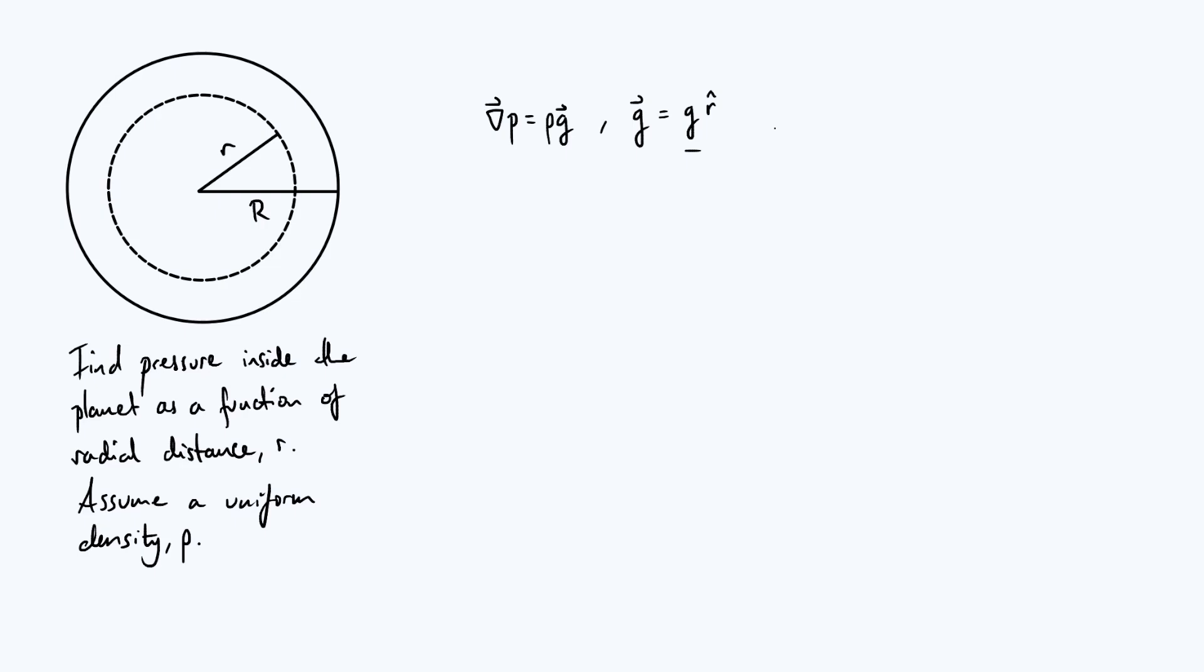So let's choose the most convenient surface to integrate over, which is just a sphere of radius lowercase r. In that case our surface integral is just going to be 4πr² multiplied by g because the gravitational field is constant on that sphere by symmetry.